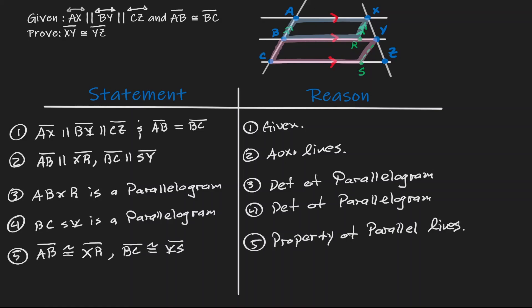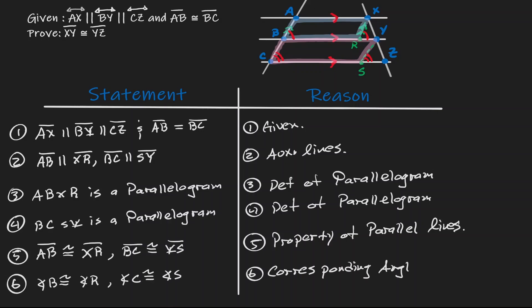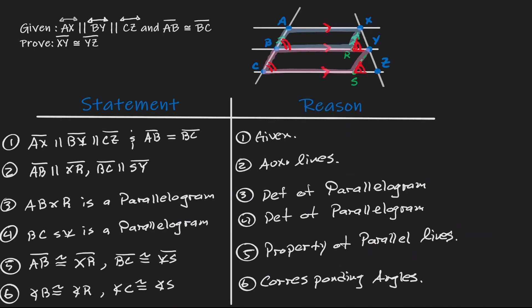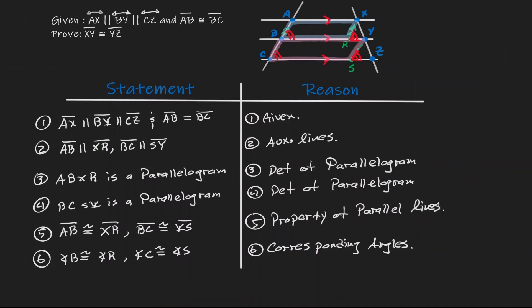Remembering that AB is parallel to XR, we can think of angle B as corresponding to angle R — therefore they are congruent. The same can be said about angle C: angle C corresponds to angle S, so they are congruent to each other. Also notice that B and C are corresponding. All four angles are corresponding to each other. Concentrating on angle R and angle S, they are congruent by the transitive property. So our next step is: angle R is congruent to angle S — by transitive property.